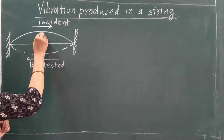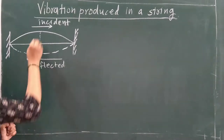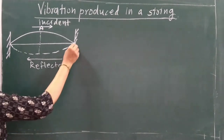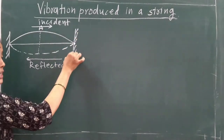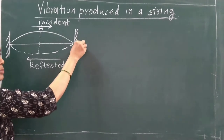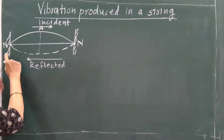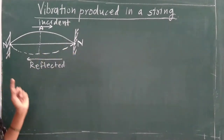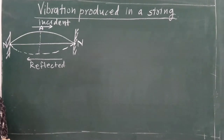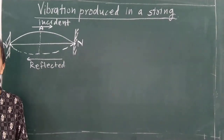In this transverse stationary wave, at the center the string vibrates with maximum amplitude — so there is formation of an antinode. At the rigid wall, the wall is not free to vibrate, therefore the displacement of the particle is zero. So at both rigid walls, there is formation of nodes. And an antinode forms at the center. Like this, a stationary wave gets set up on the vibrating string.